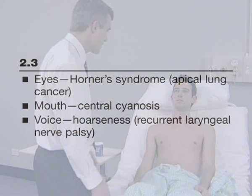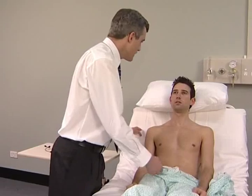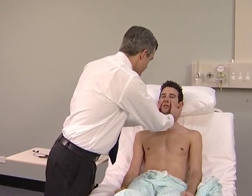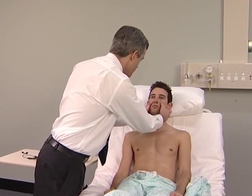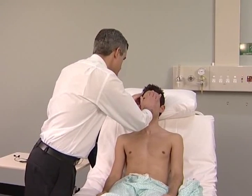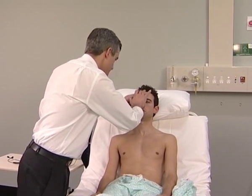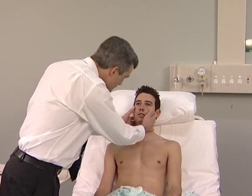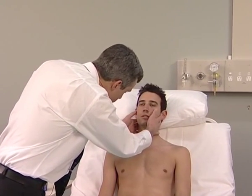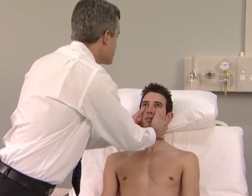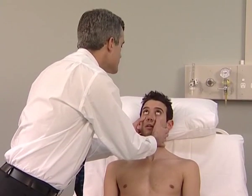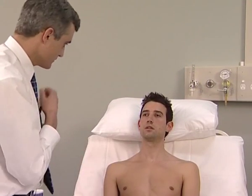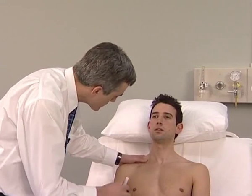Examination now moves to the face. Press the maxillary sinus for tenderness. Look carefully at the pupils and eyelids for ptosis. One eyelid is lower than the other, and for the presence of a smaller pupil on that side. This usually means Horner's syndrome, which can be caused by an apical lung tumour. Look at the tongue and inside the mouth for central cyanosis.